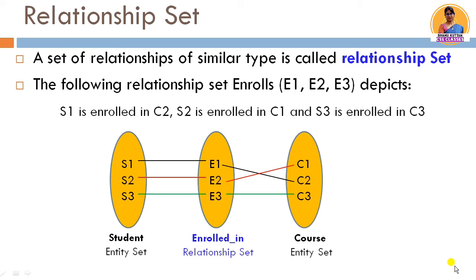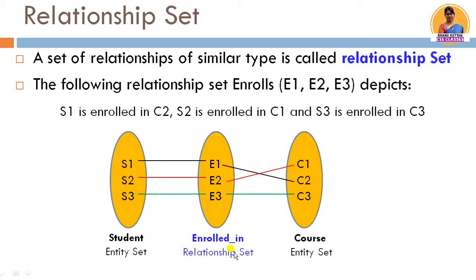A relationship set is a set of similar type of relationships. For example, the 'enrolled in' relationship set: if we have student entity set E1, E2, E3 and a course entity set, then student 1 enrolled in C1, student 2 enrolled in C2, student 3 enrolled in C3 — this collection of 'enrolled in' relationships forms the relationship set.